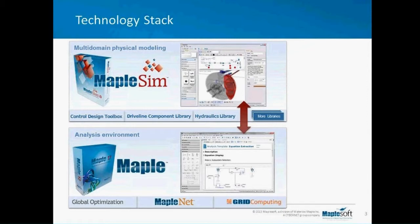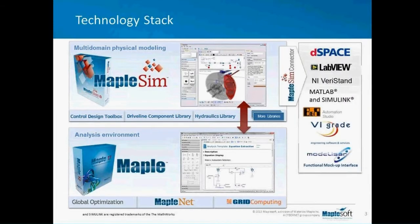MapleSim is built on top of Maple. MapleSim uses Maple's symbolic math technology to optimize system models before generating real-time code, which means our real-time code is fast. This level of symbolic optimization often means the difference between models which run in real-time and models which don't. We can deploy MapleSim models to a number of real-time platforms, including DSpace, LabVIEW, and Simulink. We're also exploring the Functional Mockup Interface, or FMI — a technology that lets you exchange model information between different engineering tools from different software developers.